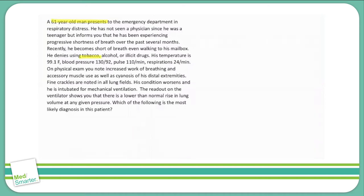Temperature is 99.1, blood pressure 130 over 92, pulse 110, respiration is 24. We notice right off the bat that he's tachycardic and tachypneic, but he doesn't have a fever. So potential causes of respiratory distress like pneumonia that are caused by an infection will probably be less likely in the absence of a fever.